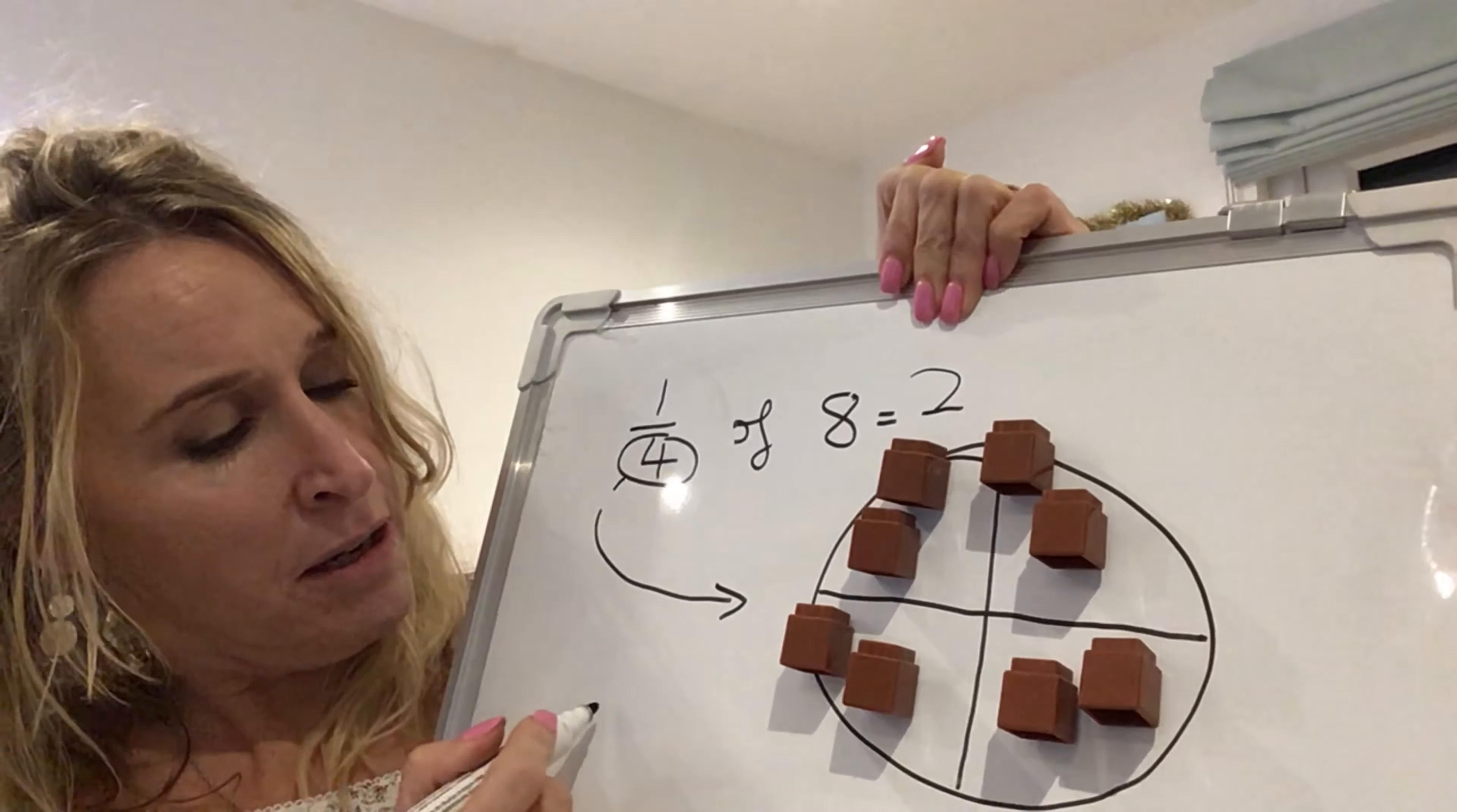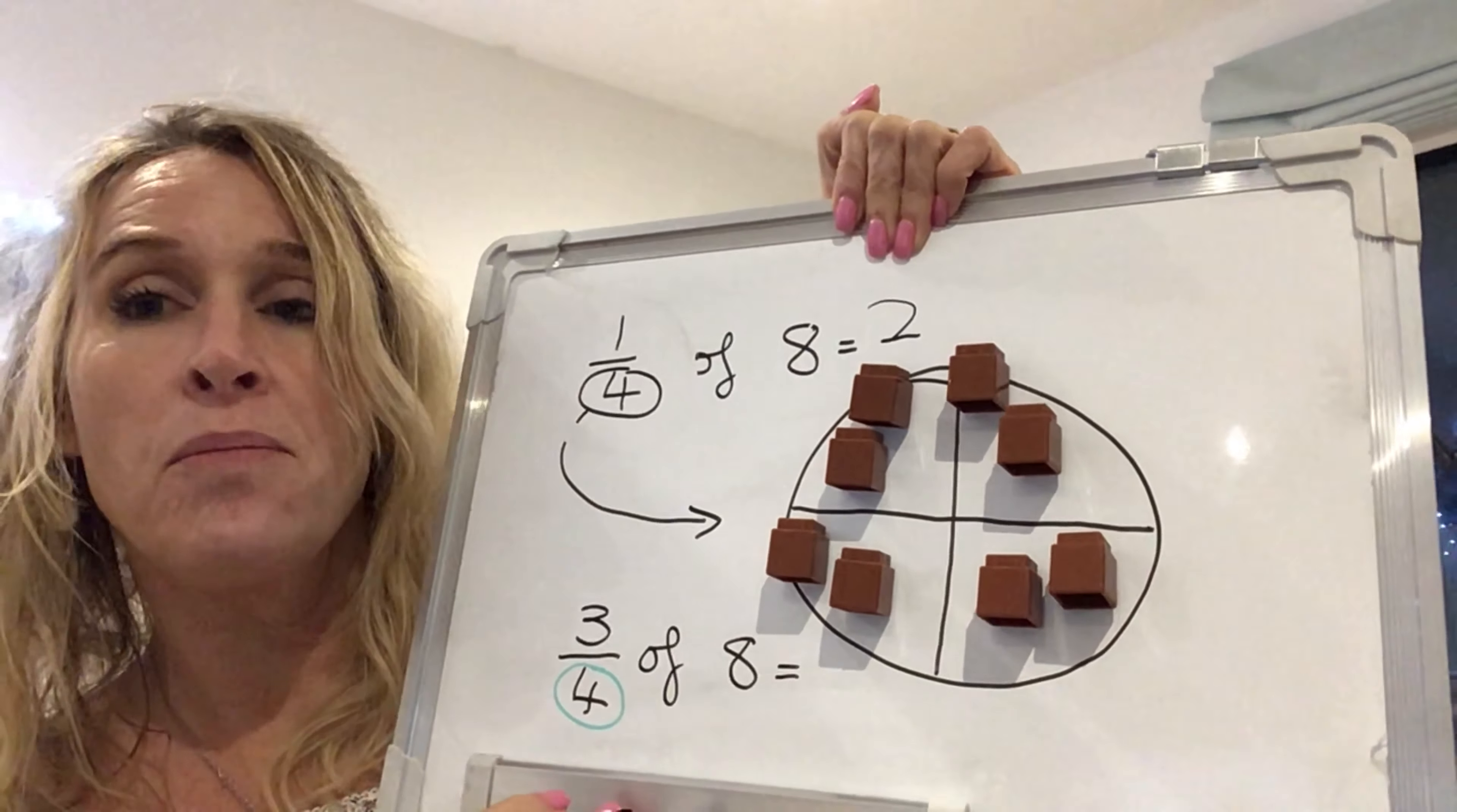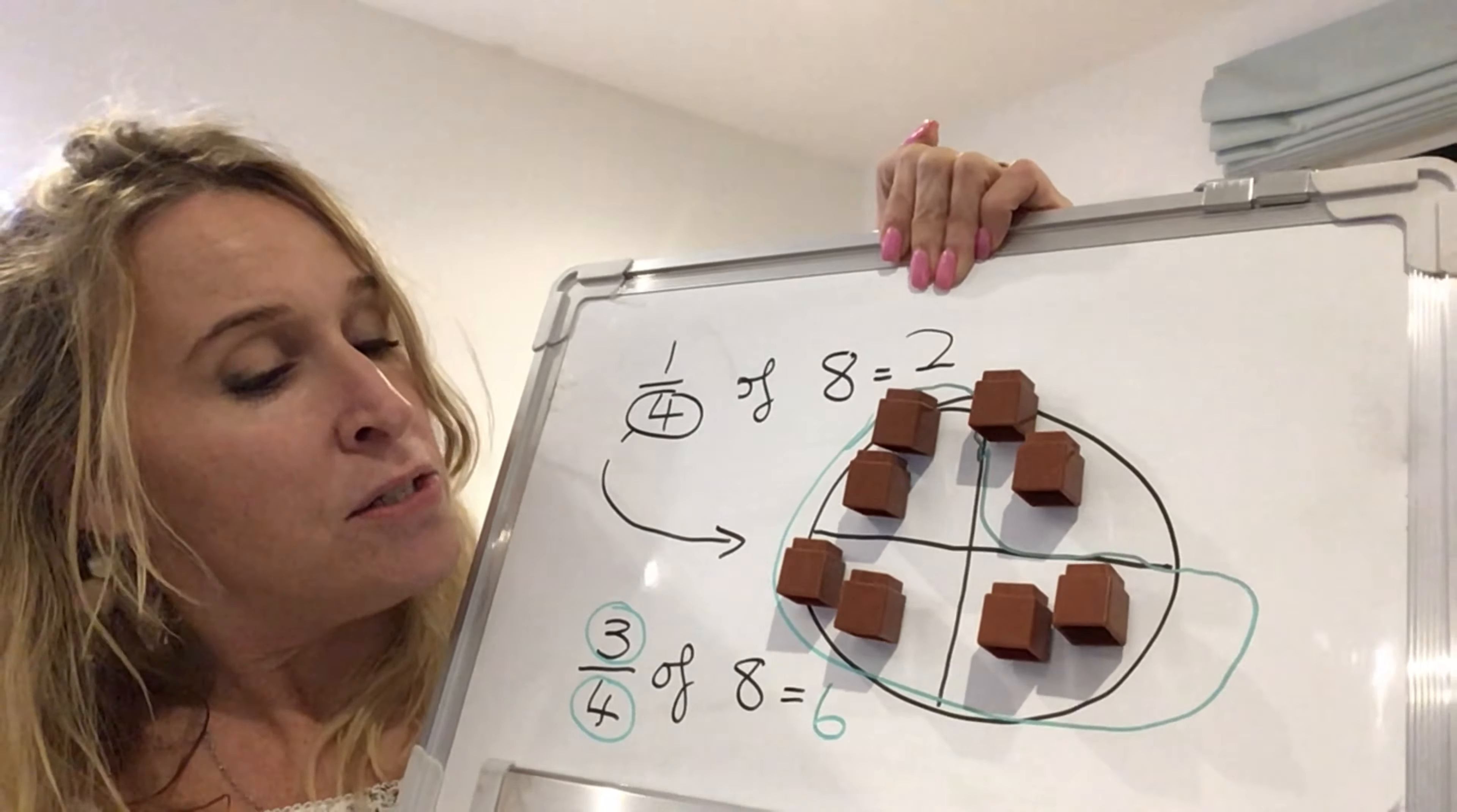Now, once we've done this, the next step would be for children to start to understand what would be three quarters of eight. So we know that one quarter, one piece is two. And if we look at the fraction, hopefully children are so solid knowing that that bottom number is the number of pieces. The top number is the number that we're counting. So we're actually going to count the pieces, the cubes on three pieces of the cake. So then they start to visually see that three quarters of eight is six.